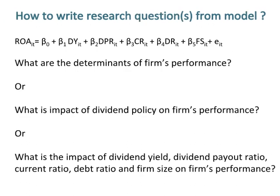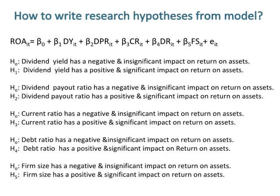How to write research questions from a model. To answer this, you must know your dependent variable, which is return on assets, taken as a proxy for firm performance. Research questions can be written from different angles, such as: what are the determinants of firm performance? Or what is the impact of dividend policy on firm performance? Or what is the impact of dividend yield, dividend payout ratio, current ratio, debt ratio, and firm size on firm performance?